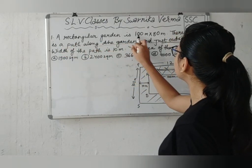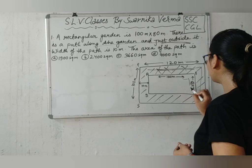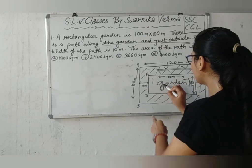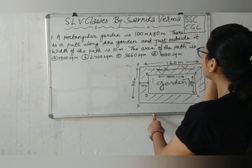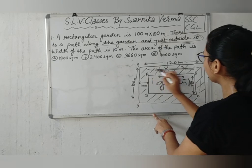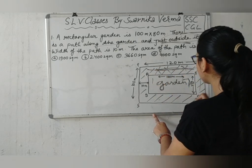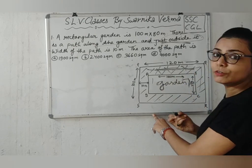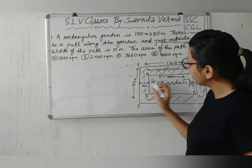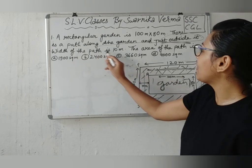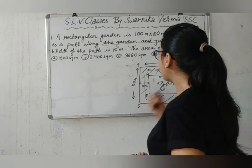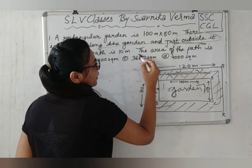This is the rectangular garden, A, B, C, D — 100m and 80m. How much is the path? According to the question, we need to find the area of the path.